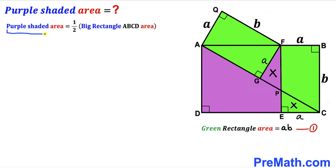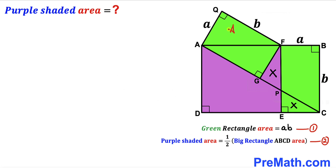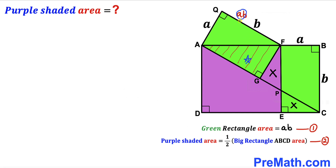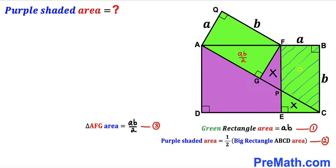We conclude that the purple shaded area is going to be equal to half of this bigger rectangle ABCD's area, and I'm going to label this as equation number two. Now let's focus again on this green rectangle. We know the area of this green rectangle is A times B, and AF is the diagonal of this green rectangle. Therefore, the area of triangle AFG is going to be half of this area — A times B divided by two. I'm going to label this as equation number three.